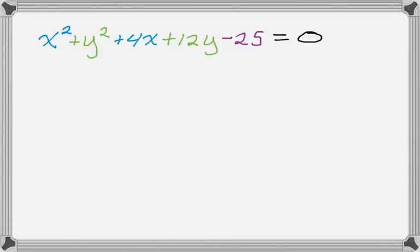So let's say we have x squared plus y squared plus 4x plus 12y minus 25 equals 0. I'm going to color code everything, so everything with an x is in one color, everything with a y is in a different color, and the constant term is yet another color.